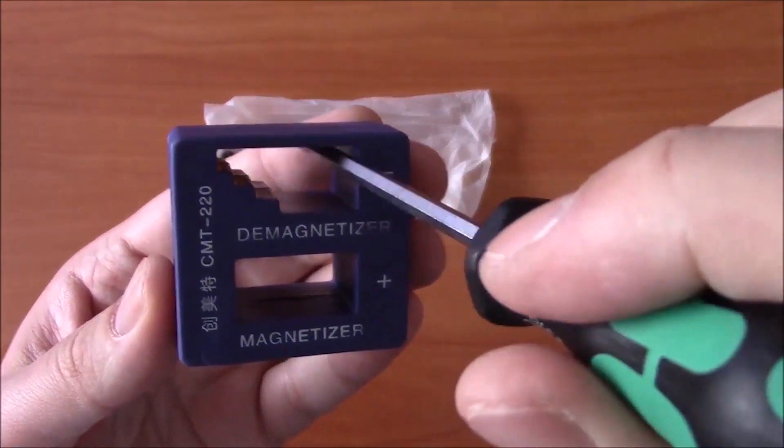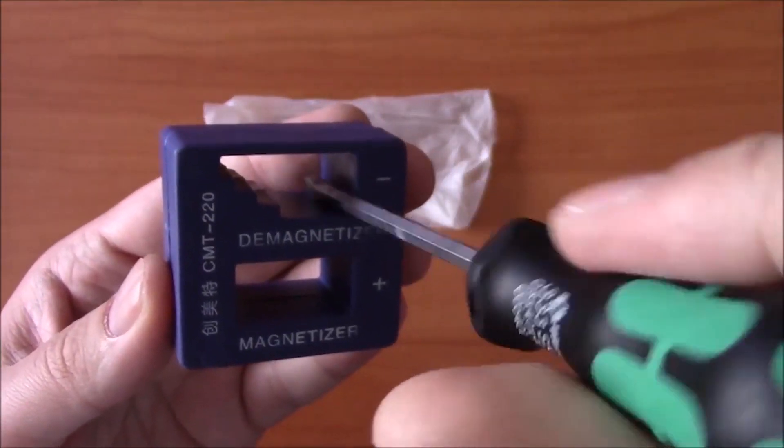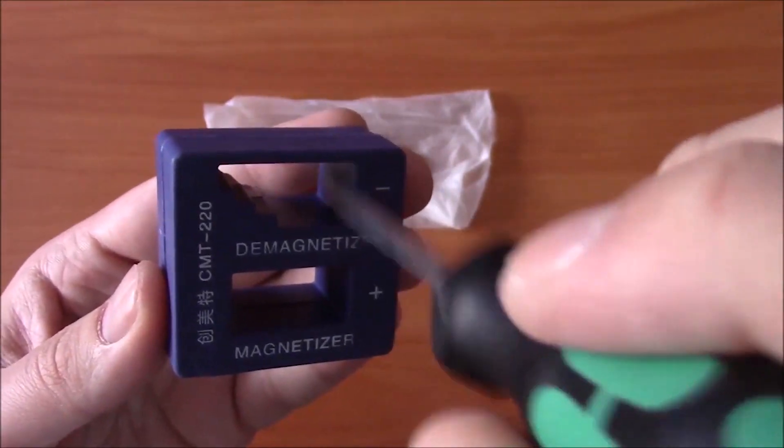In order to cancel this effect, you just should use the demagnetizing hole. That's how it works.